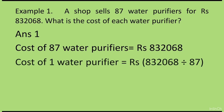After that we have to find out what is the cost of each water purifier. Cost of 1 water purifier is going to be less than cost of 87 water purifiers. So in this question we will divide. We will divide the cost of 87 purifiers, which is 832068, by 87.